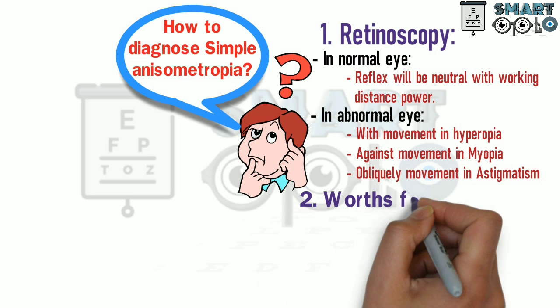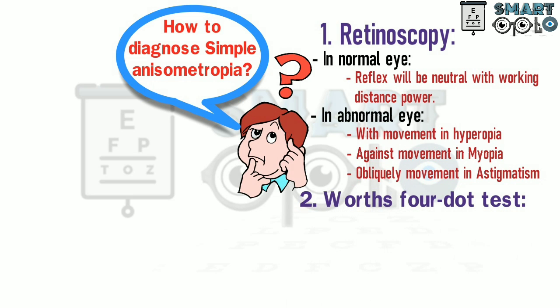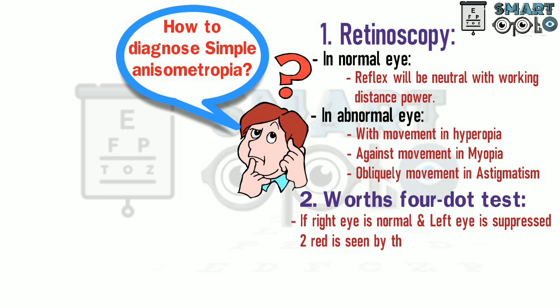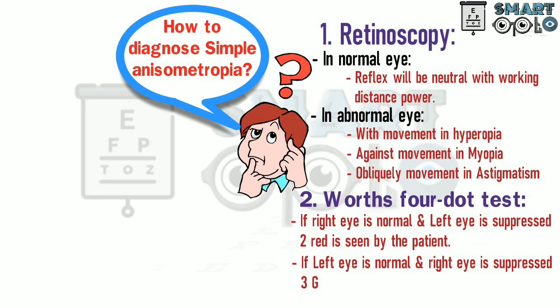The second is the Worth four-dot test. If the right eye is normal and the left eye is suppressed, then two red dots are seen by the patient. If the left eye is normal and the right eye is suppressed, three green dots are seen by the patient.